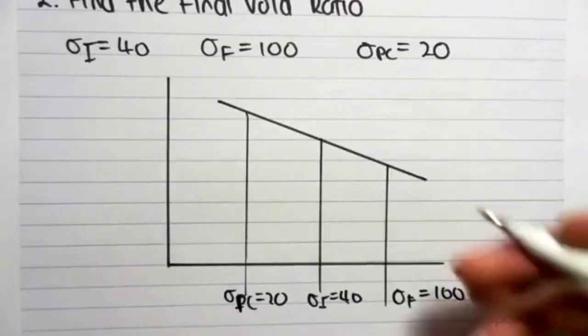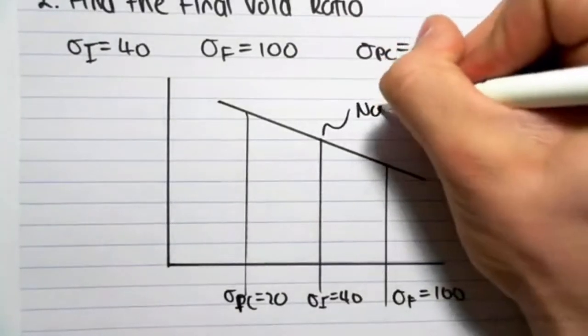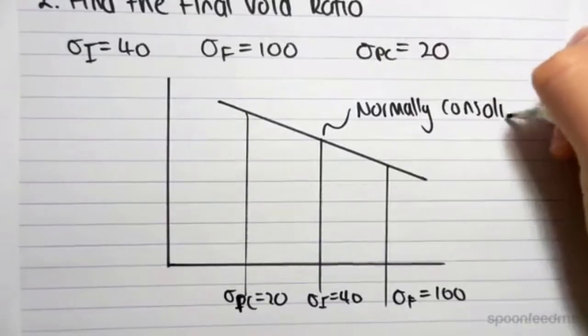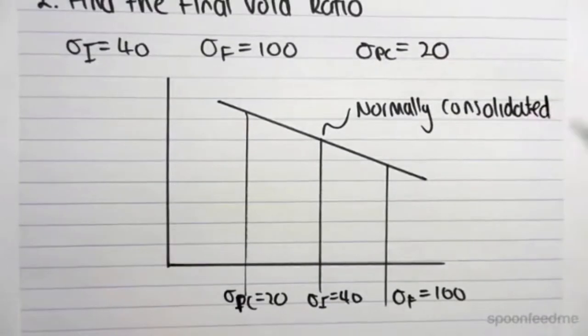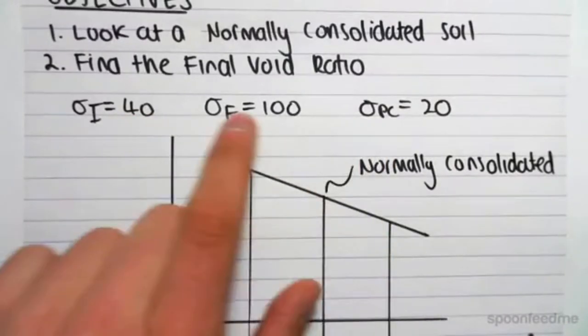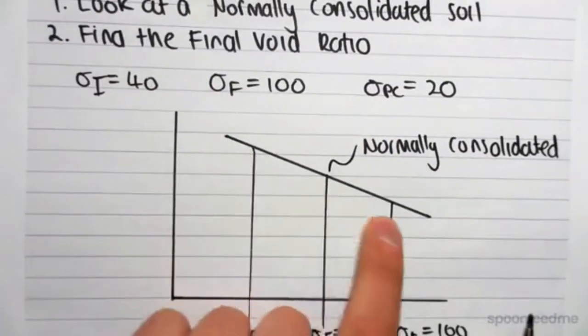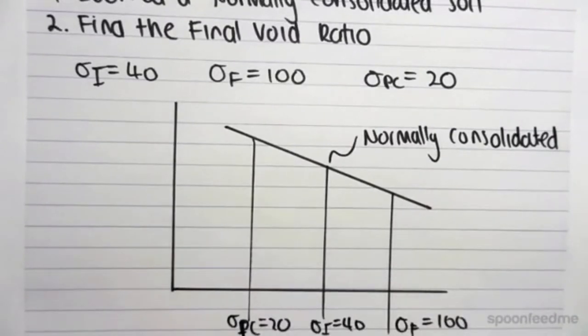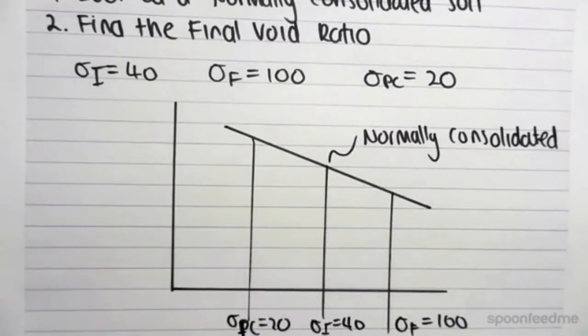So our soil, this is normally consolidated. Once again, in a question, they could do one of two things for you to deduce that you're normally consolidated. They could give you this information and you would have to draw it and see that you're normally consolidated, or they could just say in a normally consolidated soil sample. And the reason we need to know that is